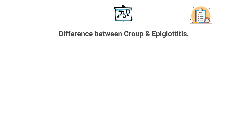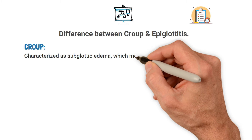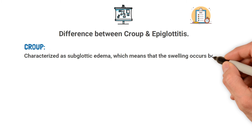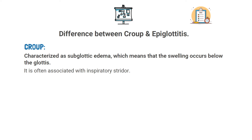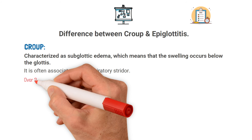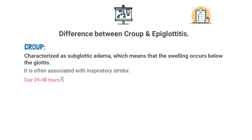For the TMC exam, you absolutely must be able to recognize the difference between croup and epiglottitis. Croup, also known as laryngotracheobronchitis, is characterized as subglottic edema, meaning the swelling occurs below the glottis. It is often associated with inspiratory stridor, and the onset occurs more slowly — usually over 24 to 48 hours. One thing to look for when croup is present is the steeple sign on a lateral neck x-ray.